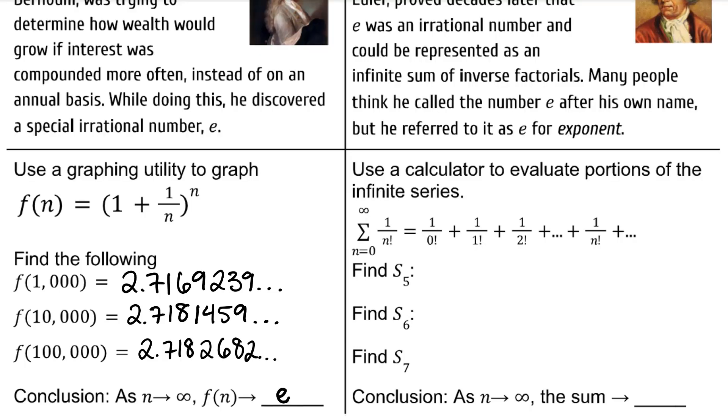Euler found another way to represent e. Use a calculator to evaluate portions of the infinite series. In unit 8, we'll talk more about this series notation. But what's happening is that I'm adding up an infinite amount of fractions. So when I find S sub 5, that means what is the sum of the first 5 of those fractions? The first fraction is 1 over 0 factorial. The second is 1 over 1 factorial and it continues in this pattern.